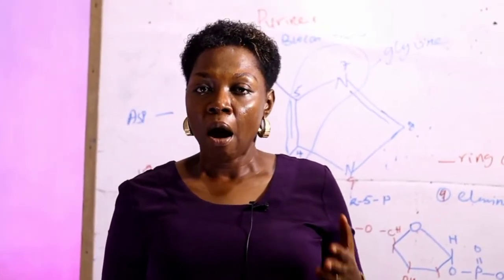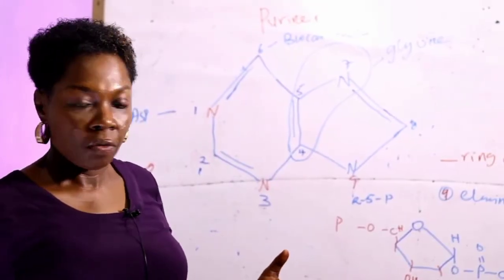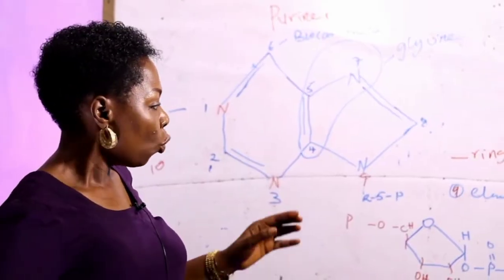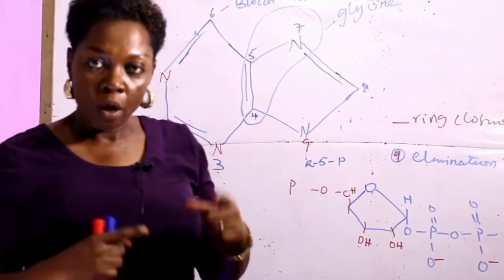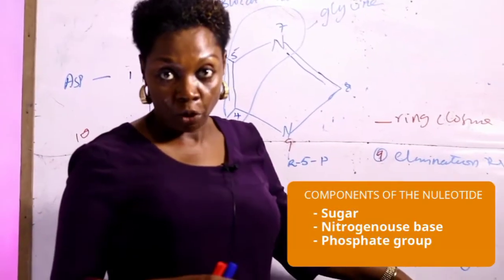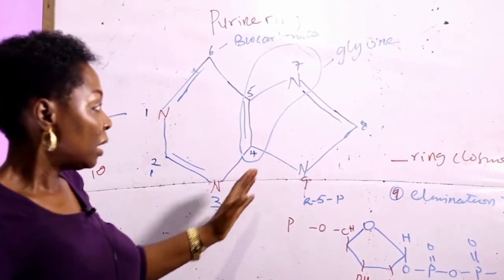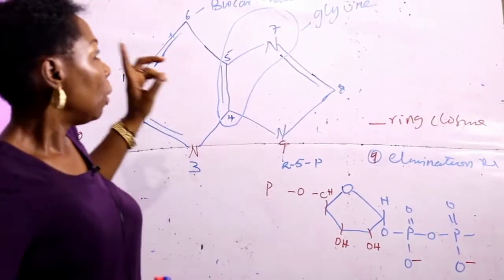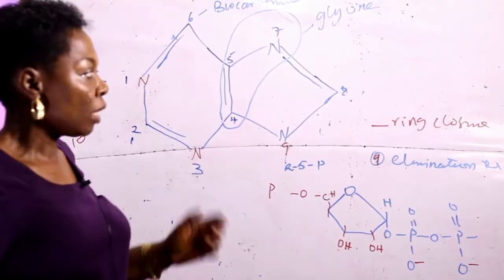Remember, the two purines are the adenine base and the guanine base. One key thing we should note is that in purine biosynthesis, we have the synthesis of the nitrogenous base on the ribose sugar. By way of recap, the components of a nucleotide are the sugar, the nitrogenous base, and the phosphate group. For the synthesis of the purine, we have the synthesis of this nitrogenous base on the ribose sugar.